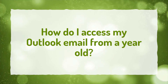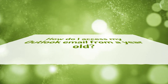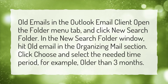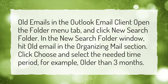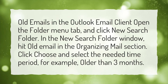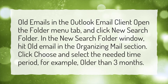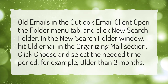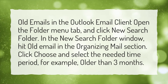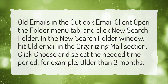How do I access my Outlook email from a year old? To access old emails in the Outlook email client, open the Folder menu tab and click New Search Folder. In the New Search Folder window, hit Old Email in the Organizing Mail section. Click Choose and select the needed time period, for example, older than 3 months.